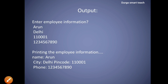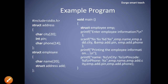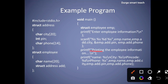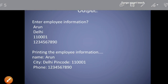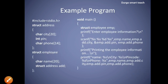The output shows: first 'enter employee information', and the user entered the name Arun, city Delhi, pin code, and phone number. Next, we are printing the information: name is Arun, city is Delhi, pin code is 110001, and phone number is 1234567890. In this way, we can use nested structures in a C program.